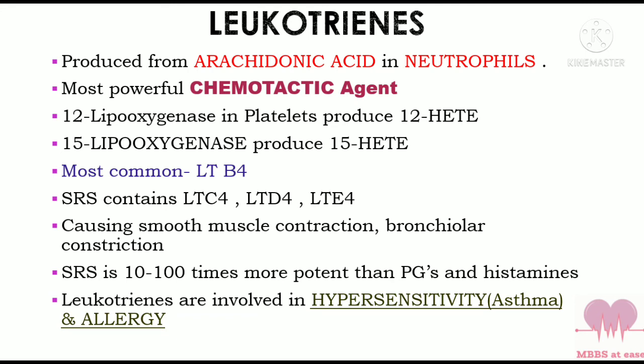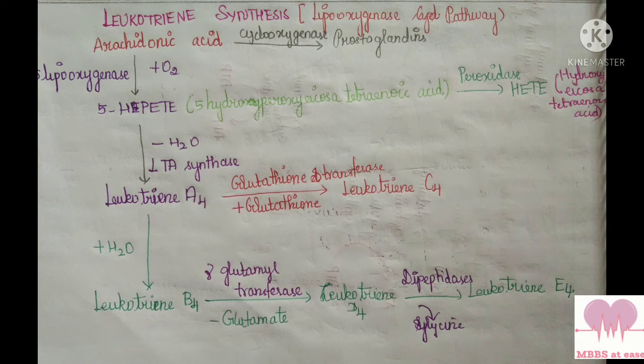Slow-reacting substances of anaphylaxis contain leukotriene C4, D4, and E4. The number four denotes that leukotrienes have four double bonds. They cause smooth muscle contraction, constrict the bronchioles, increase capillary permeability, activate leukocytes, and produce vasoconstriction. Slow-reacting substances are 10 to 100 times more potent than prostaglandins and histamines. Leukotrienes are involved in hypersensitivity activities like asthma and allergies.